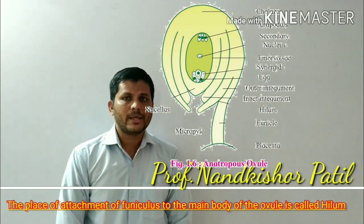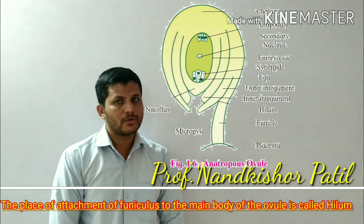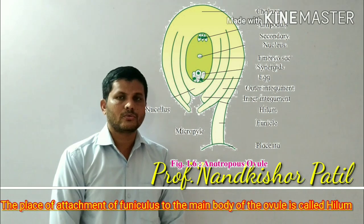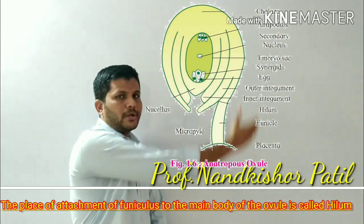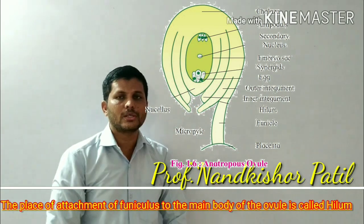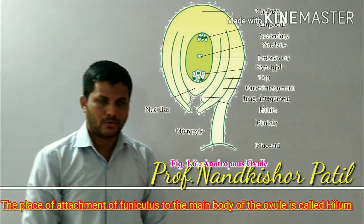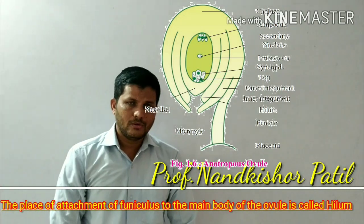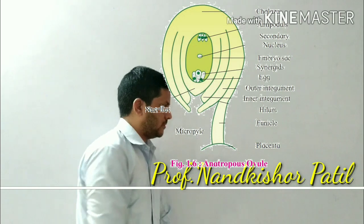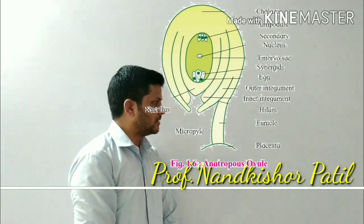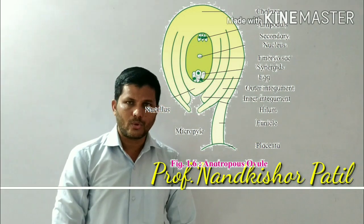And the place of attachment of the funicle to the main body of the ovule is called as the hilum. So this part is called as the hilum, which is attached to the main body of the ovule.